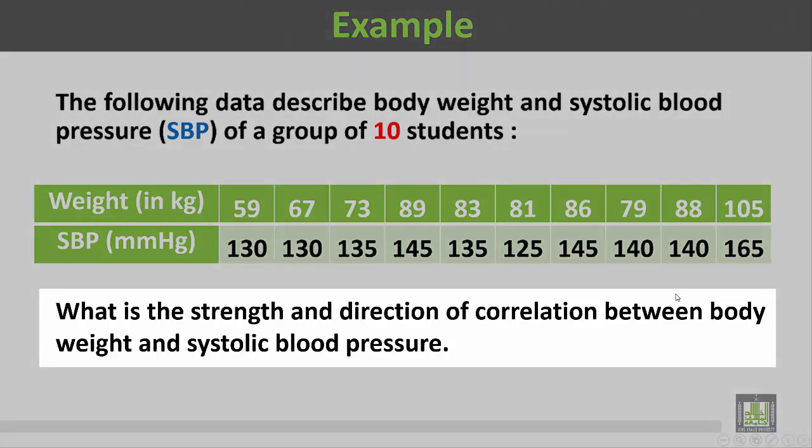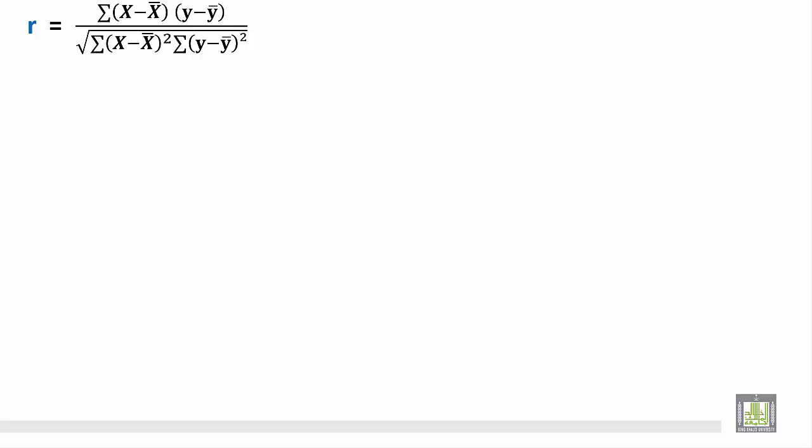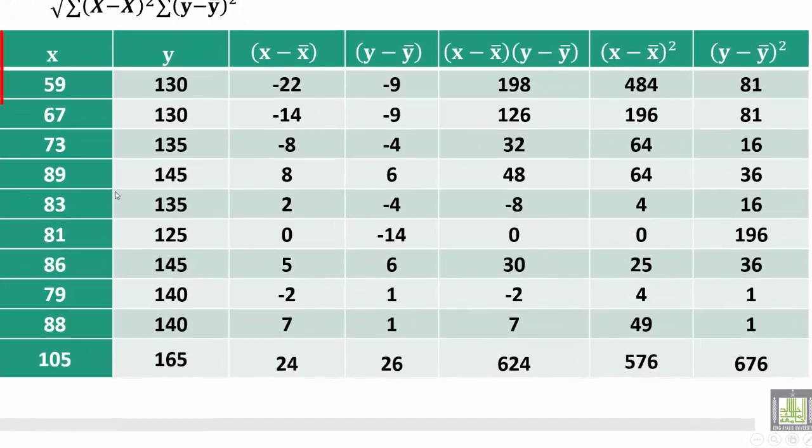What is the strength and direction of correlation between body weight and systolic blood pressure? The correlation coefficient r is equal to sigma of (x minus x-bar) times (y minus y-bar), divided by the square root of sigma (x minus x-bar) squared times sigma (y minus y-bar) squared.